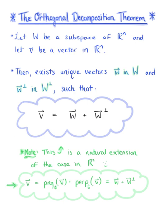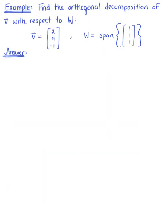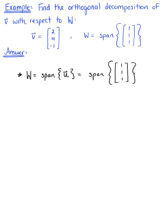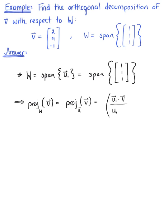Let's continue our exploration of orthogonal decomposition with the following example: find the orthogonal decomposition of vector v with respect to subspace W. We are given vector v, and since subspace W is spanned by a single vector, we can say W equals the span of u₁, where u₁ is the vector with components 1, 1, 1. Since W is spanned by this single vector, the orthogonal projection of vector v onto subspace W equals the projection of v onto vector u₁, which is defined as (u₁ · v) divided by (u₁ · u₁), multiplied by vector u₁.